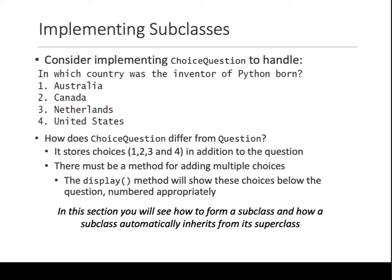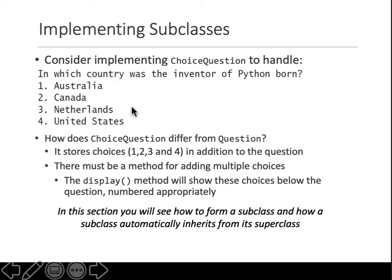Now let's say you want to implement a multiple choice question. For example, 'In which country was the inventor of Python born?' And you give some choices, but you still have one correct answer, like we did for the input question.